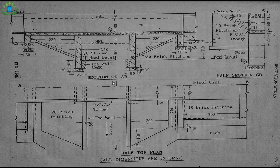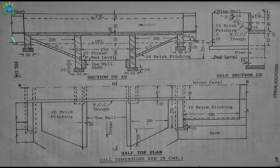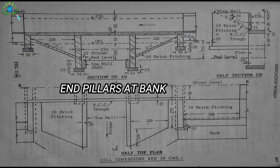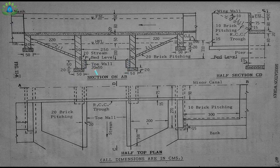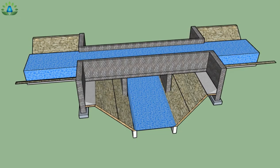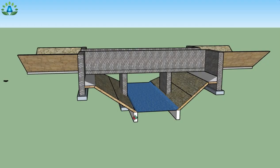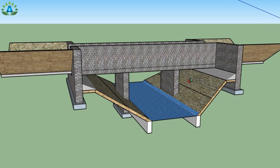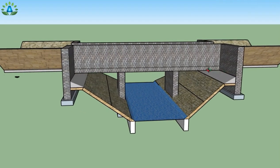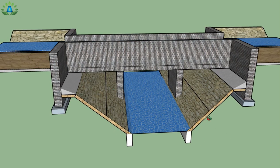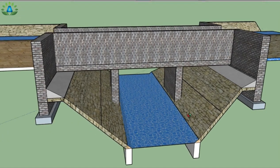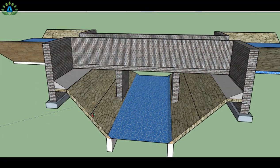We need to visualize these sections and the half section. The bed level is at a certain level and we have two pillars at the bed and two end pillars at the bank. We have two toe walls having a width of 20 and height of 50 centimeter. The two inclined portions are the side slopes of the minor canal for pitching at the upstream and downstream sides. The 3D view shows stone pitching on both sides with a side slope of 2 to 1, and during high flow the stream water reaches the high flow level.